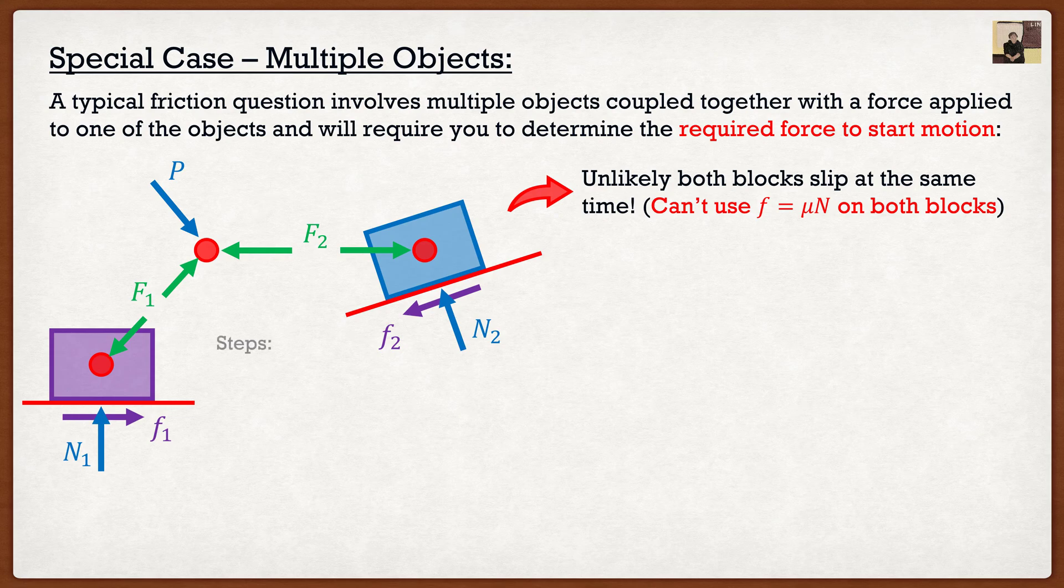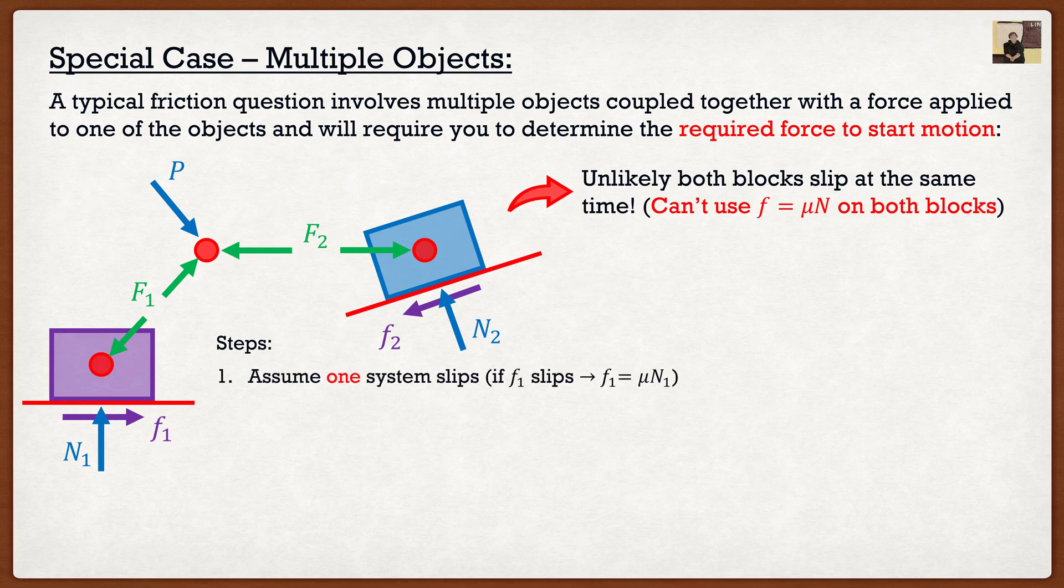So this is what the steps would be. And my personal steps, there's many different ways you can do this. But this is how I personally do it. I assume one system slips. All right, just one, not both of them, just one.